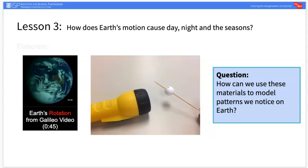In the elaborate portion of this lesson, students will develop another Sun-Earth model. They will be divided into groups and provided with a flashlight, styrofoam ball, and a skewer. Students will place the skewer, which represents Earth's axis, through the styrofoam ball, which represents Earth.